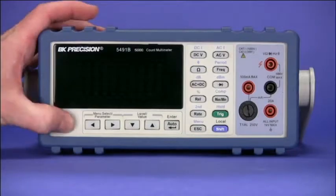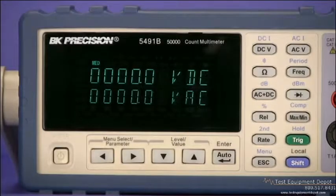Here is the BNK Precision Model 5491B, a 50,000 count, four and three quarter digit, true RMS bench digital multimeter.